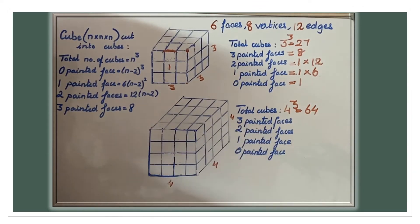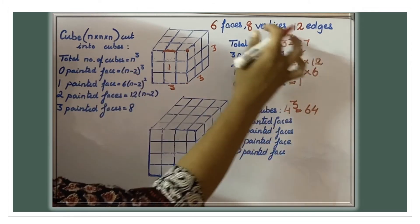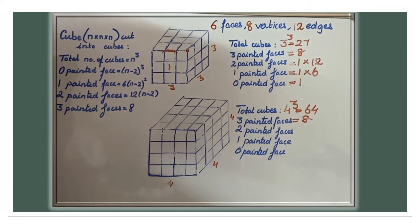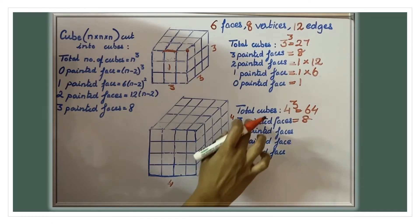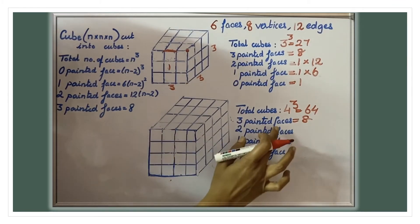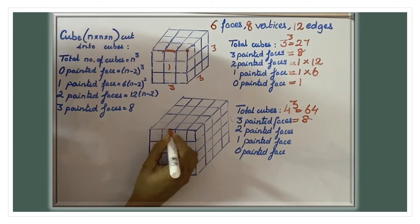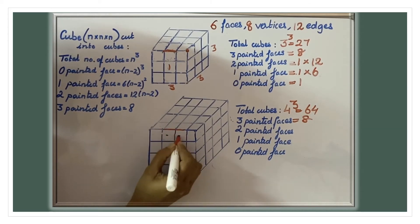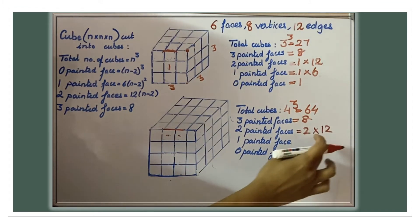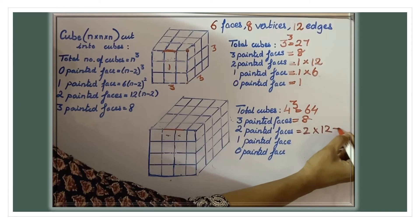Three faces painted are always eight, the same for any cube whether three by three, four by four, or five by five, because a cube always has eight vertices, and at each vertex there is one three-face-painted cube. For two faces painted, check one edge — in this four by four cube, each edge has two cubes that are two faces painted. Multiply by twelve edges: total twenty-four cubes are two faces painted.